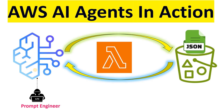For example, if I type something like 'upload the JSON file with this content,' the action is performed by the agent using the action definition defined in the backend, and it will automatically send a response saying 'I have uploaded this file into this particular S3 bucket, this is the file I've created.' This is the kind of agentic AI configuration I'm going to show you in this video.